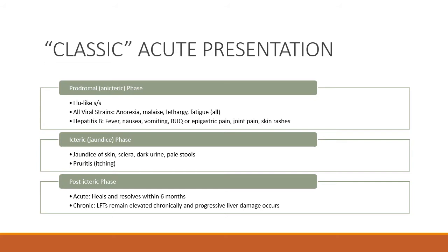In the post-icteric phase, so after the jaundice has resolved, the acute hepatitis liver heals itself. It resolves within six months and the cells will actually regenerate if they can. In the chronic hepatitis patient, the LFTs remain elevated chronically and progressive liver damage occurs. So if the infection remains past that six-month mark, the person is said to have chronic hepatitis.